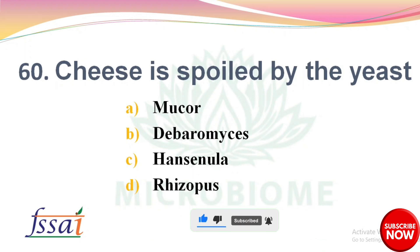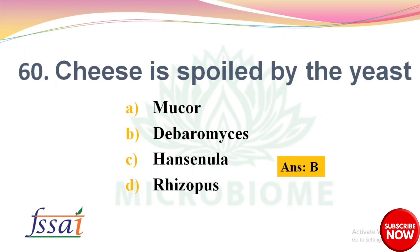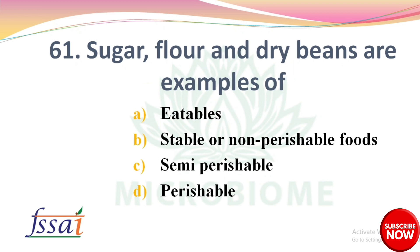Cheese is spoiled by which yeast? Options: A) Mucor, B) Debaryomyces, C) Hansenula, D) Rhizopus. The right answer is option B: Debaryomyces. Sugar, flour, and dry beans are examples of? Options: A) Eatables, B) Stable or non-perishable foods, C) Semi-perishable, D) Perishable. The right answer is option B: Stable or non-perishable foods.